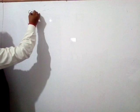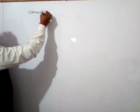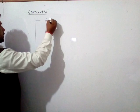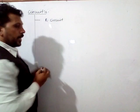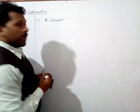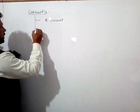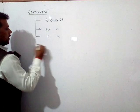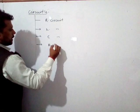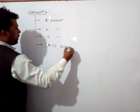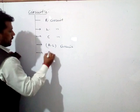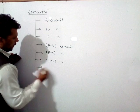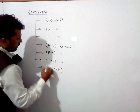So, the circuits we will cover are: R-circuit — a circuit with only an ohmic resistance — L-circuit, C-circuit, R-L circuit, R-C circuit, L-C circuit, and finally the L-C-R circuit.